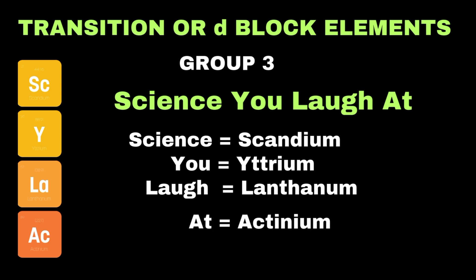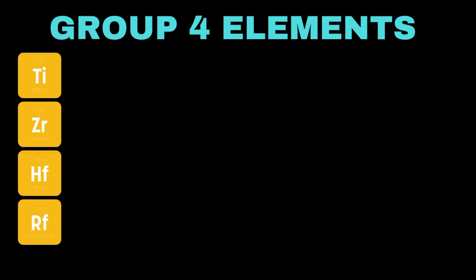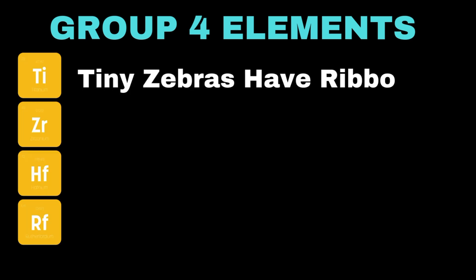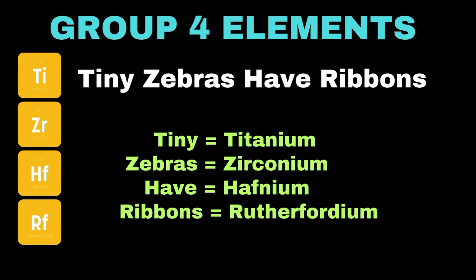Now let's move towards group 4 elements. One of the easiest tricks to remember these elements is: 'Tiny zebras have ribbons.' Here 'tiny' represents titanium, 'zebras' represents zirconium, 'have' denotes hafnium, and 'ribbons' refers to rutherfordium.